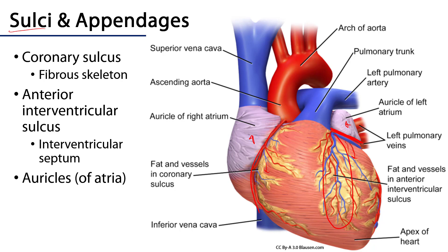We can also see atrial appendages, called the auricles of the atria. Auricle means ear, and these represent space into which blood can flow during diastole as the heart relaxes.